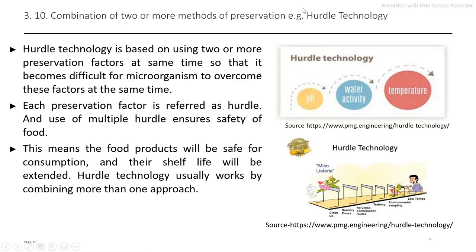Combination of two or more preservation methods applied to a specific single product — that means reducing the pH, then reducing the water activity, reducing the temperature — resulting in whatever the shelf life of that food being extended to a specific required target level. This is hurdle technology. In hurdle technology, we apply specific methods depending on the specific type of food product.